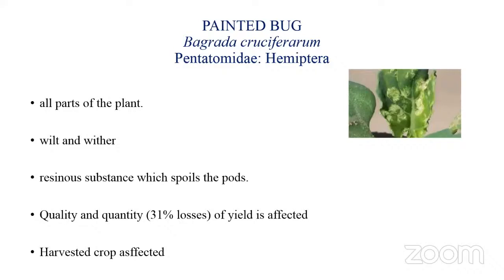The next pest is the painted bug, Bagrada cruciferarum, a serious pest in north India, belonging to family Pentatomidae and order Hemiptera. Adults and nymphs suck sap from all parts of the plant. Young plants attacked will wilt and wither. The adult bugs excrete a resinous substance that spoils the flour — that is why they are named 'painted bug'. The quality and quantity of yield is also affected, and harvested crops during threshing are also known to be infected.